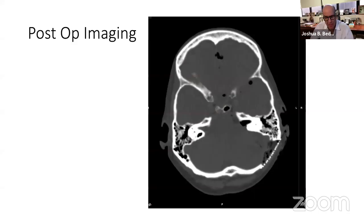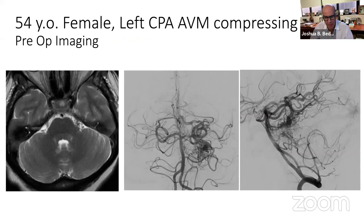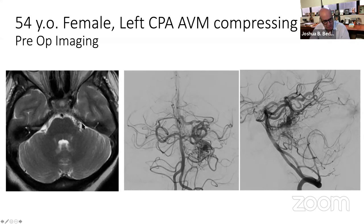The last case is a trigeminal AVM — I've done about eight of these that have caused trigeminal neuralgia. You see the compression of the nerve root entry zone. It is a subarachnoid lesion that does not involve the brain stem but does involve the pial surface. Most of the pathology is medial to the fifth nerve — what we're looking at is the fifth nerve itself with dilated tortuous veins over its surface. We targeted the duplicated branches of the superior cerebellar artery and ICA branches one by one, both preoperatively with Dr. Berenstein embolizing these and surgically.